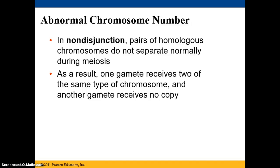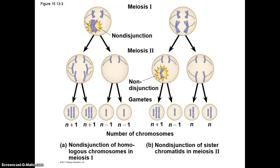In humans, non-disjunction — which is when pairs of homologous chromosomes do not separate normally during meiosis — can result in a chromosome disorder, for example Down syndrome. As a result, one gamete receives two of the same type of chromosome and another gamete receives no copy. These gametes have one normal set plus an additional chromosome, while others are lacking one chromosome.